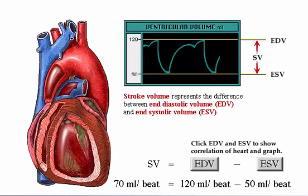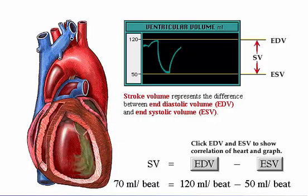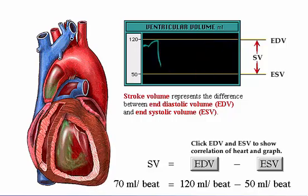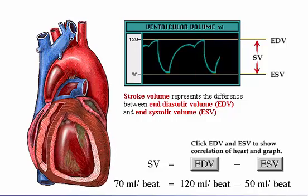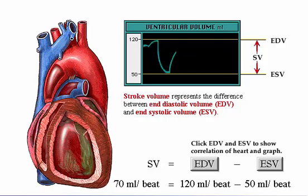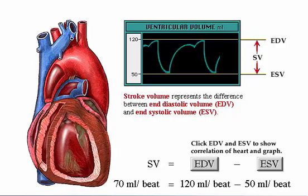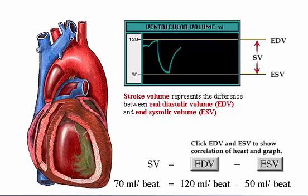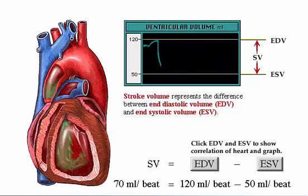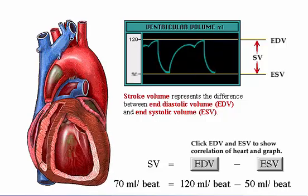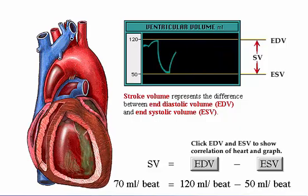Stroke volume is the difference between end diastolic volume and end systolic volume. By the time diastole ends, each ventricle has filled up with blood. This amount of blood is the end diastolic volume, or EDV. The amount of blood ejected during systole is the stroke volume. At the end of systole, the volume of blood remaining in each ventricle is the end systolic volume, or ESV. For example, each ventricle normally contains about 120 milliliters of blood by the end of diastole. At the end of systole, about 50 milliliters of blood are left in each ventricle. This means that 70 milliliters of blood were pumped out of each ventricle during systole.